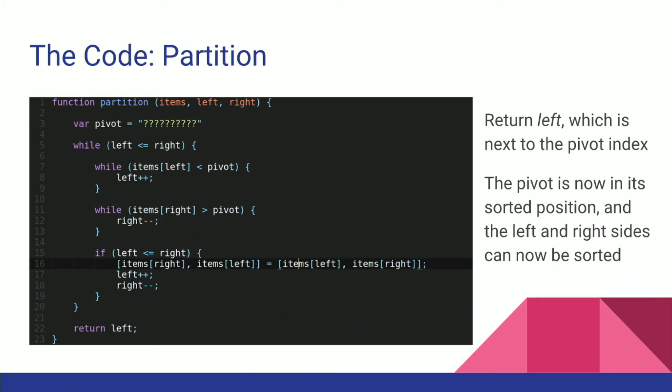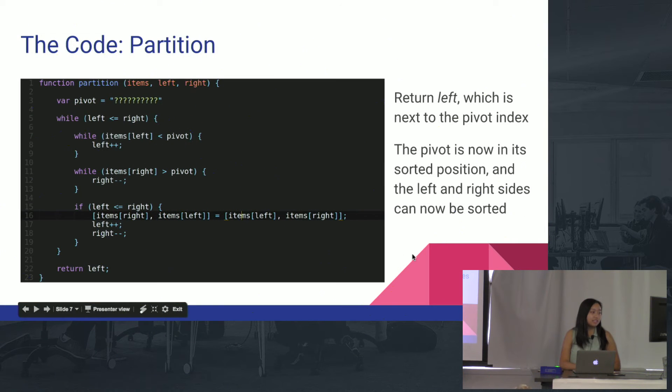So this is the code in JavaScript. I intentionally left choosing the pivot empty, because we're going to go over that later, but it's pretty straightforward. It's a bunch of while loops, checking to make sure that the pointers haven't crossed, and if the values are less than or greater than the pivot. I used ES6 for the swapping, but you could have done it without ES6.